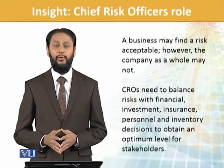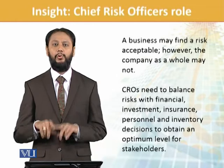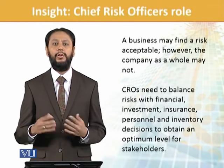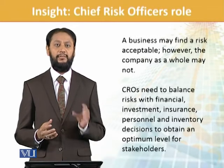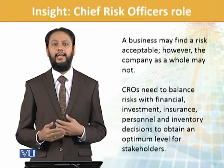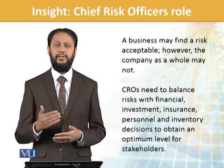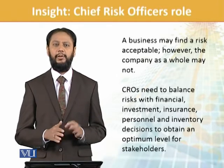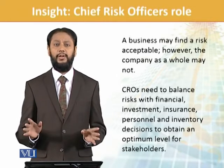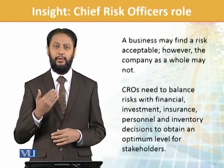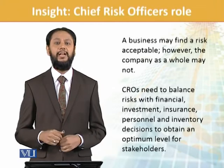A business segment may find certain risks acceptable; however, the company as a whole may not. For example, Unilever previously acquired a company where certain inefficiencies in oil production were acceptable for that business segment, but were not acceptable for Unilever as a whole. As a result, they sold off that segment because it did not align with the main organization's strategy and theme.